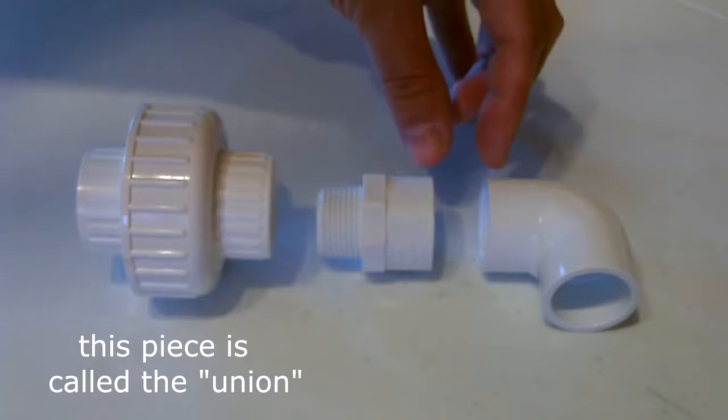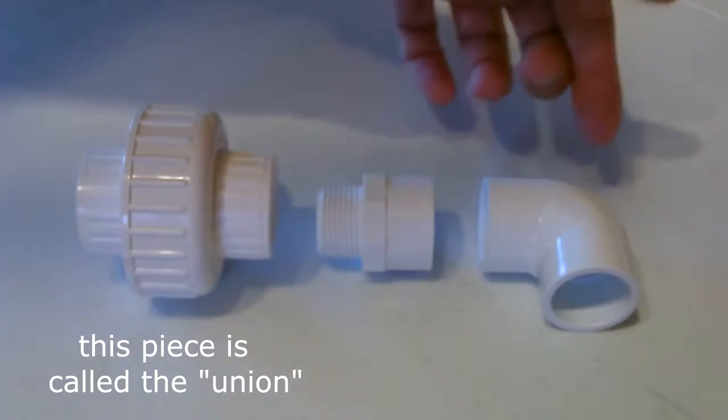So this is basically how it goes together. The adapter screws into the top of the union, then I'll put a small piece of PVC in between here - three inch section, maybe three to four inch.